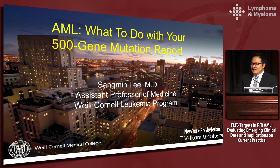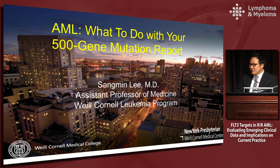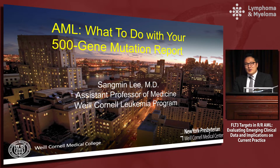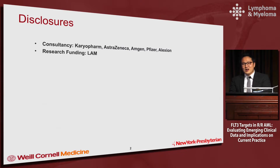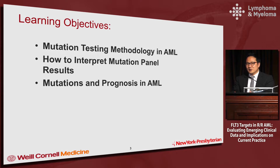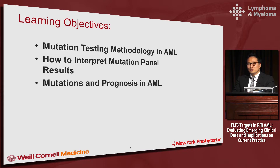Now I get to talk about mutation testing and how it's done. Dr. Robles talked about the fun targetable stuff. My objectives are to talk about mutation testing methodology in AML. We talk about NGS testing a lot — what does that mean? I want to go over how to interpret an actual mutation panel result when you receive it, and I will talk about prognosis and what to do with this information in AML.